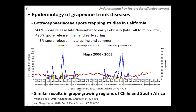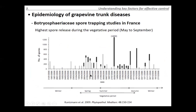However, spore release patterns are not the same in all regions. In France, most Botryosphaeria spore release occurred during the vegetative period — spring, summer, and autumn — completely different from California. In British Columbia, three years of data show the first spore release typically in late winter to early spring, with a major discharge almost every year between May and June. There is a better correlation with temperature than with precipitation: spore release begins when temperatures reach about 5–8°C. Very few spores are trapped during winter when temperatures are below zero and precipitation falls as snow.